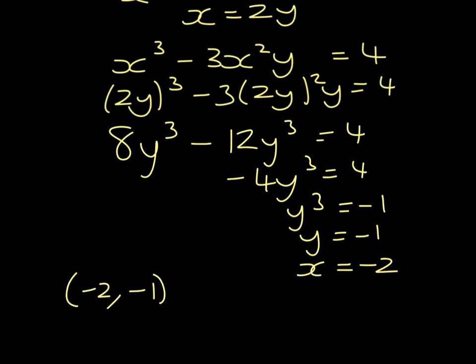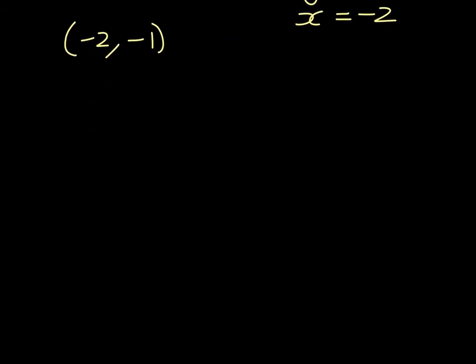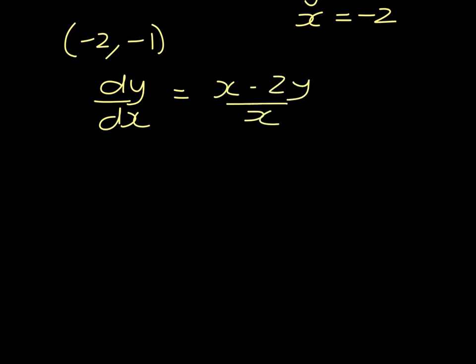What we now need to do is prove whether it's a maximum or a minimum. Dy dx was x minus 2y all over x. So that's our u and our v.